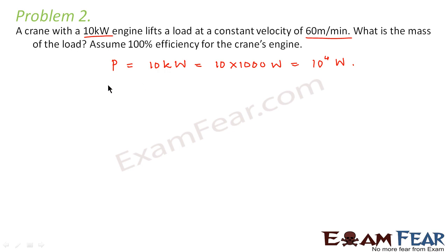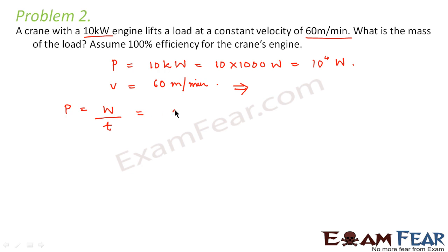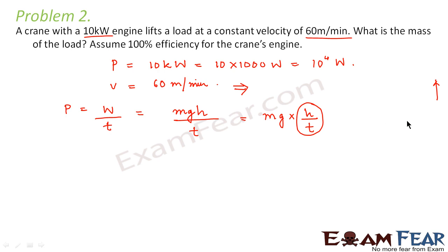In this case we are given the value of power as 10 kilowatts, which is 10 × 1000 = 10⁴ watts. It says the loads are lifted at a constant velocity of 60 meters per minute. This means the displacement of each load is 60 meters in a time of 1 minute. Now, power equals total work done divided by total time taken. Here the work done is mgh because the loads are lifted vertically, so power equals mgh/t. And h/t is simply the height traveled per unit time.